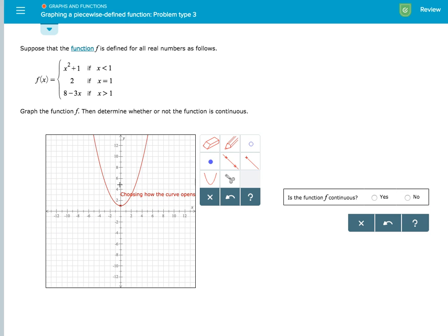Because there's a positive leading coefficient, we know the graph faces up. To place our other point, we'll use x equals negative 1. Negative 1 squared is 1, plus 1 is 2. Place it at negative 1 comma 2.